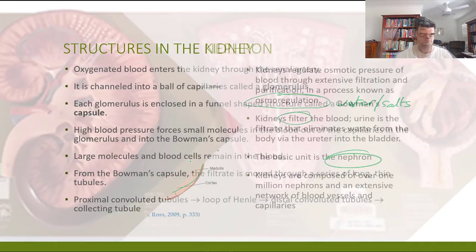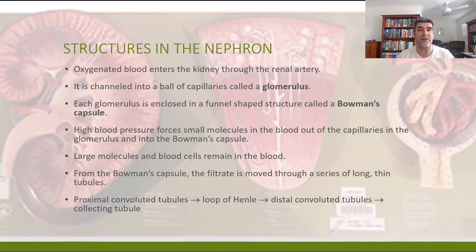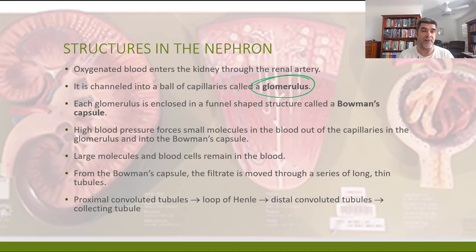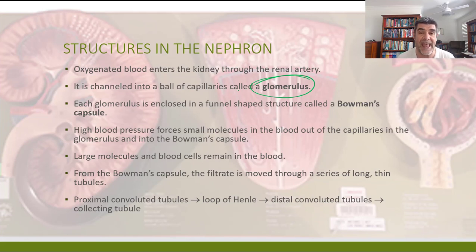Oxygenated blood, which has come from the heart — been through the lungs and back from the heart — goes into the kidney through the renal artery. As it splits into smaller and smaller blood vessels, it eventually becomes a little ball of capillaries called a glomerulus. At the glomerulus, there is a whole lot of very concentrated capillaries close together, and high blood pressure is going to squeeze a whole lot of material out of the blood — anything small enough to fit through those spaces is going to be filtered out of the blood at this point.